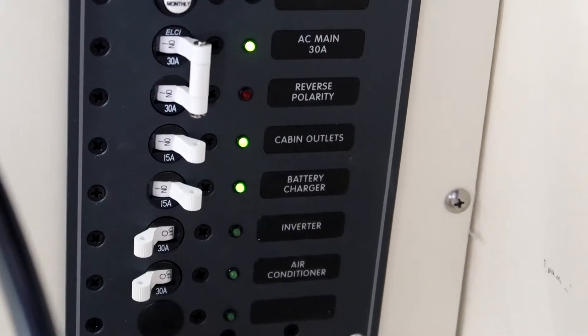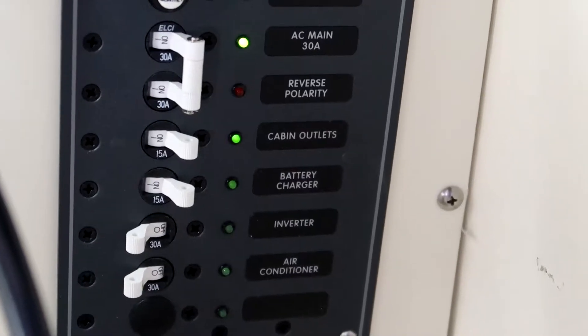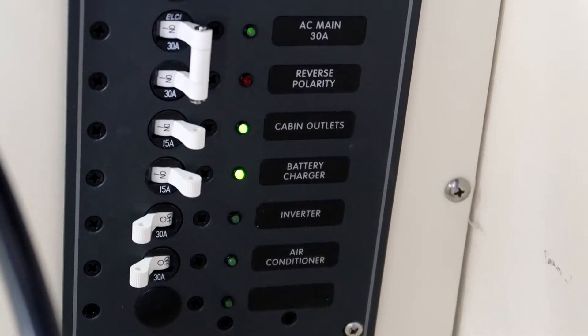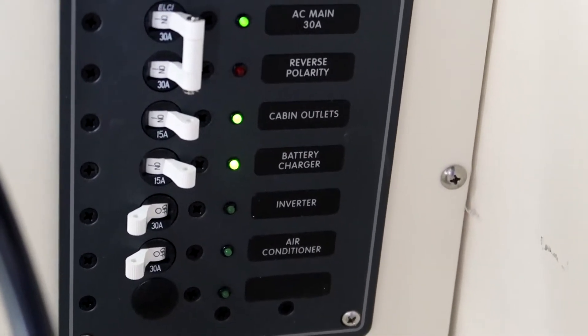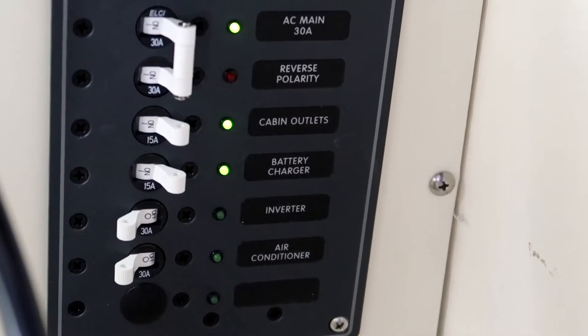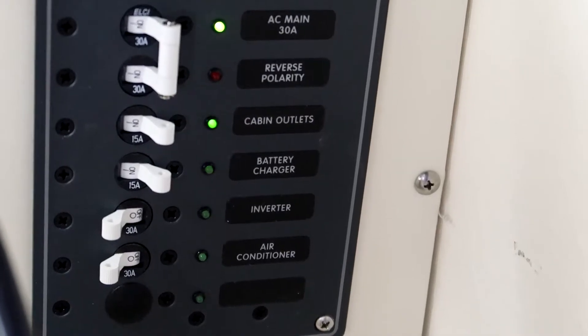I am going to have an inverter in here and I put in that 30 amp plug also for an air conditioner. So I added those two 30 amp plugs. Now you won't be able to charge the inverter and run an air conditioner wide open without flipping the breaker.